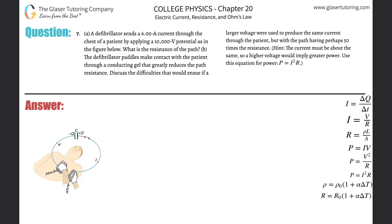Number 7, letter A. A defibrillator sends a 6 amp current through the chest of a patient by applying a 10,000 volt potential as in the figure below. What is the resistance of the path?